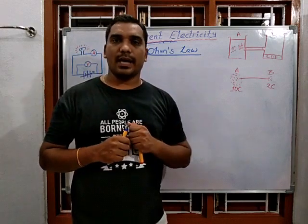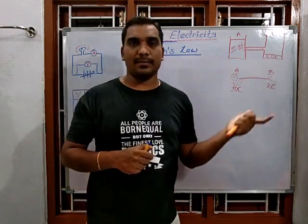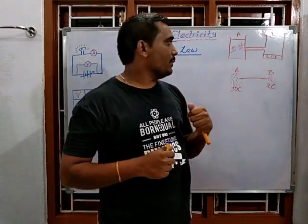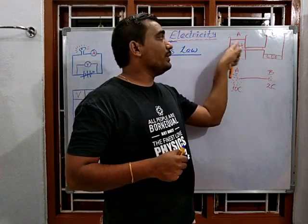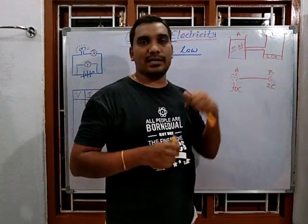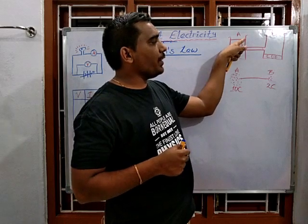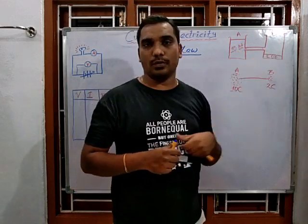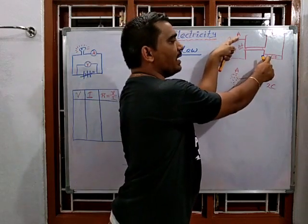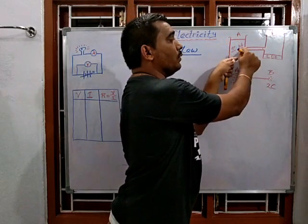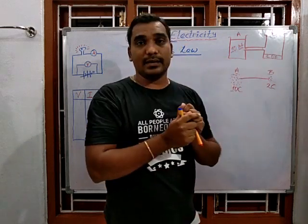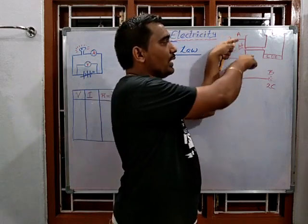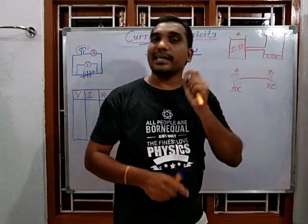Using the water container example for Ohm's Law: if we have 8 liters in one container, the water is under very high pressure. If the difference between the two containers is very low, then the rate of flow of water is very slow.